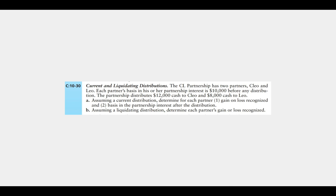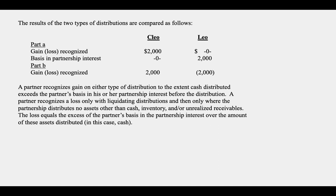Part B assumes a liquidating distribution — these partners will no longer be partners. For Clio we have a two thousand dollar gain again: Clio received twelve thousand dollars cash and her basis was ten thousand. But Leo now has a loss because Leo's basis in the partnership is ten thousand and Leo only received eight thousand in complete liquidation of that interest. Leo is allowed to recognize the loss because only cash was distributed.